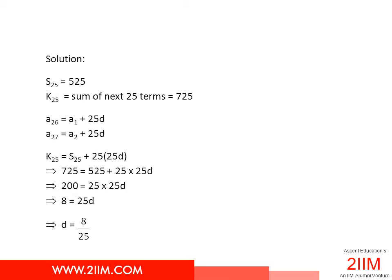Likewise, the 27th term is going to be a2 plus 25 times common difference. So the first 25 terms and the next set of 25 terms are each separated by a difference of 25d.